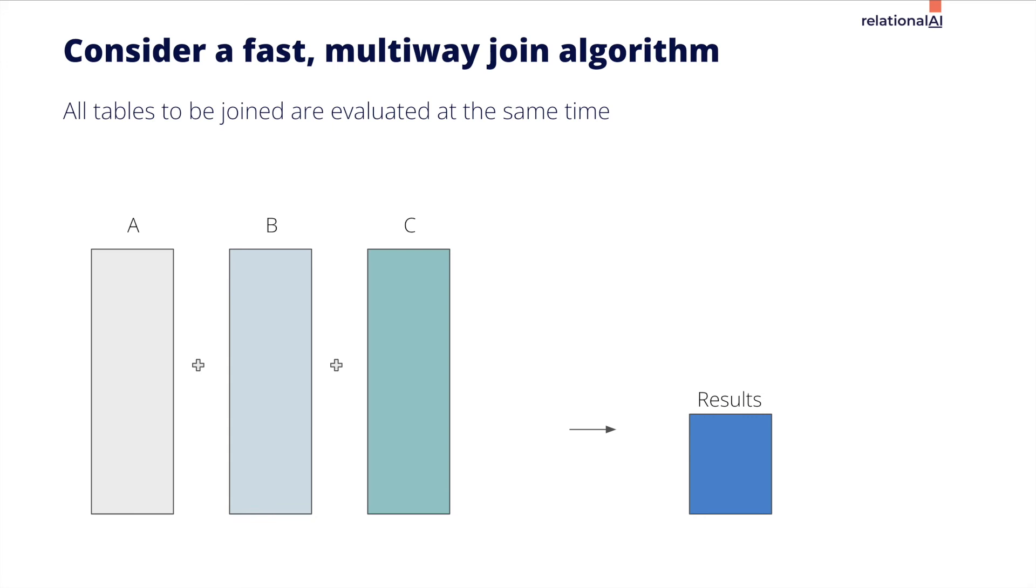Now let's consider our dovetail join. GNF tables each have a single value column. Instead of processing two tables at a time, we process all of the tables at once.